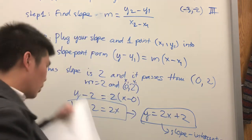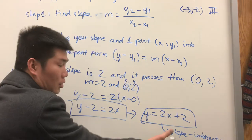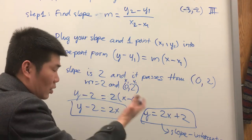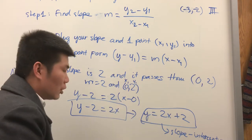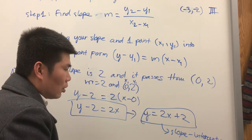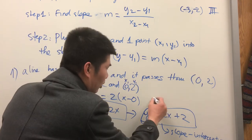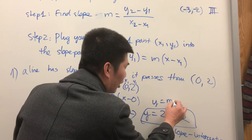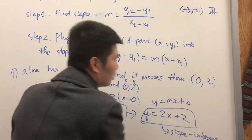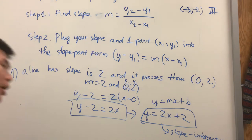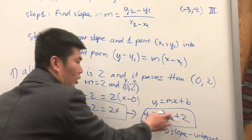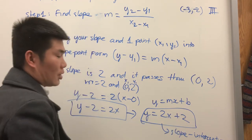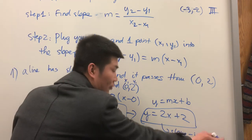You can stop at either form, because both are valid equations of the line. Slope-intercept form is y equals mx plus b, where m is the slope and b is the y-intercept — that's why it's called slope-intercept form.